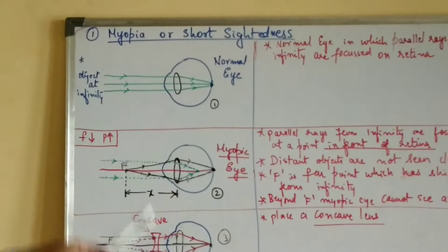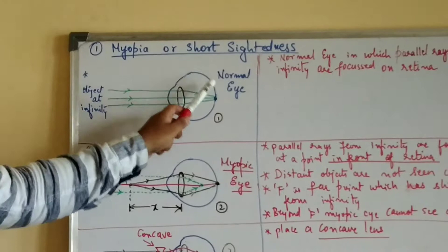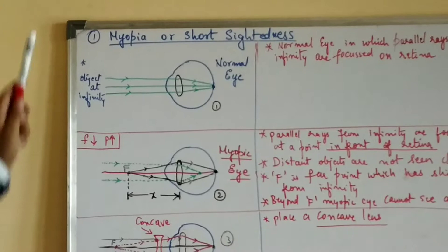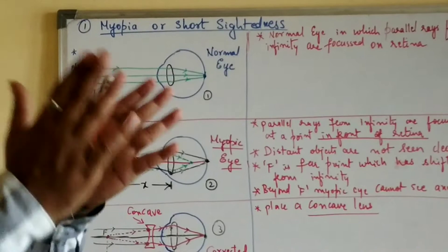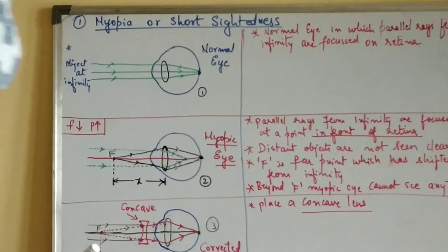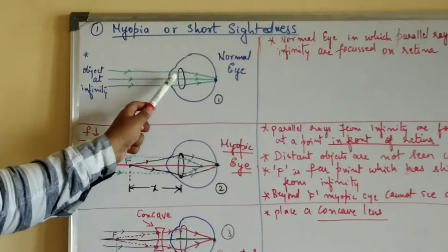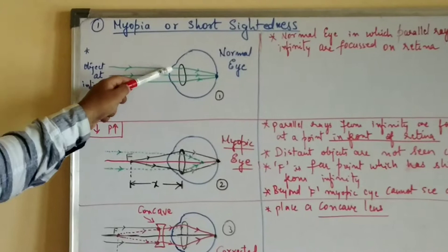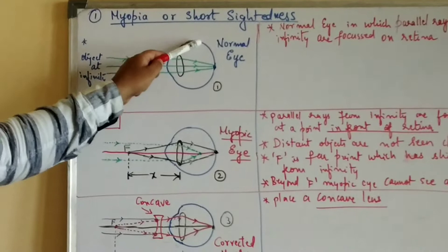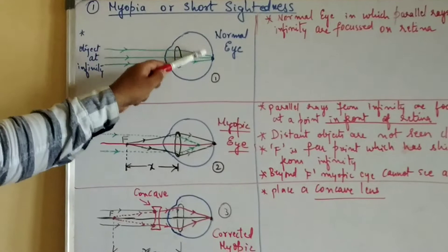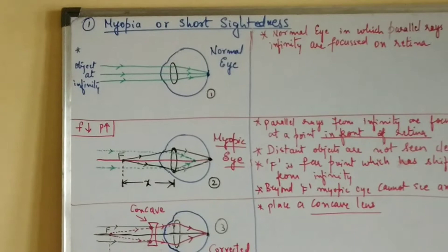Now let us begin. For a normal eye, when the object is at infinity — meaning a very large distance — parallel rays coming from the object are focused on the eye lens, which is a convex lens. After refraction through the eye lens, all the rays converge at one point exactly on the retina. Whenever all rays converge at one point on the retina, the eye is capable of seeing that object clearly.